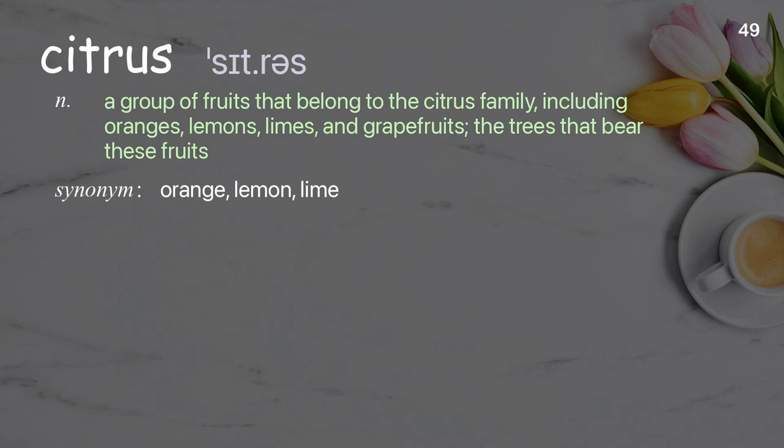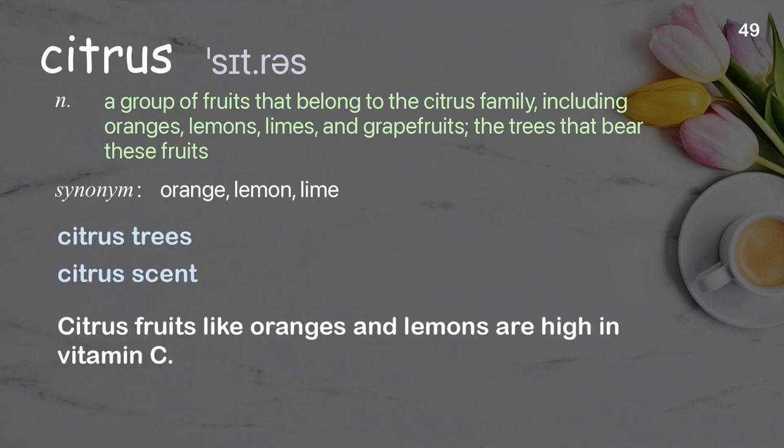Citrus: A group of fruits that belong to the citrus family, including oranges, lemons, limes, and grapefruits; the trees that bear these fruits. Examples: Citrus trees. Citrus scent. Citrus fruits like oranges and lemons are high in vitamin C.